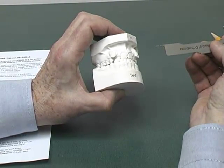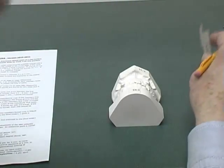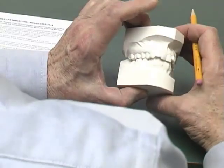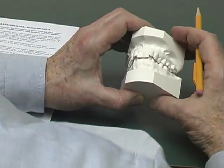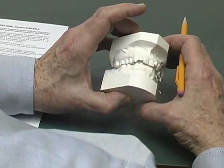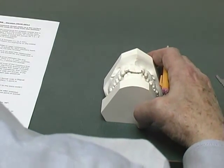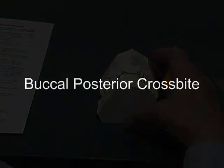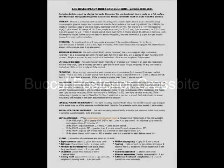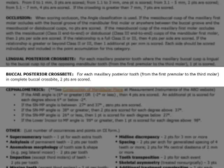The previous two cases have allowed us to look at various aspects of the overjet and anterior open bite categories. Now this next set of casts is DI-4, and I wish to demonstrate the buccal posterior crossbite, which is the only remaining category for initial cast analysis that we've not discussed. For each maxillary posterior tooth from the first premolar to the third molar in complete buccal crossbite, two points are scored.